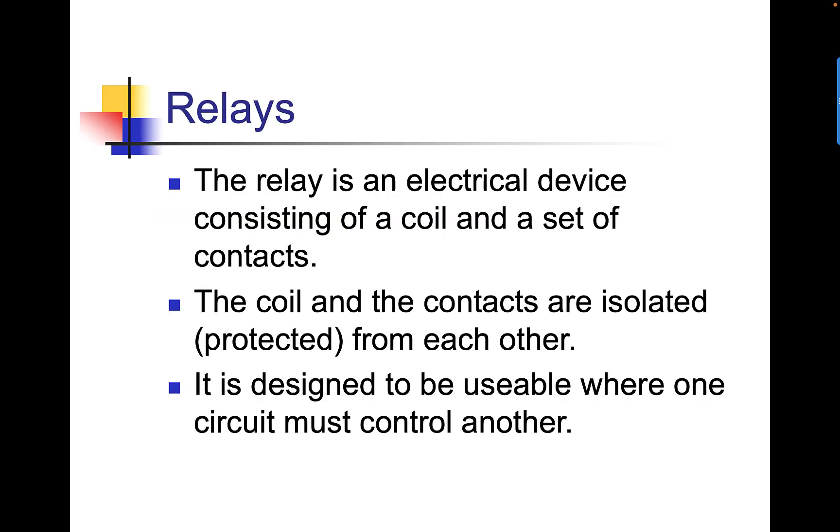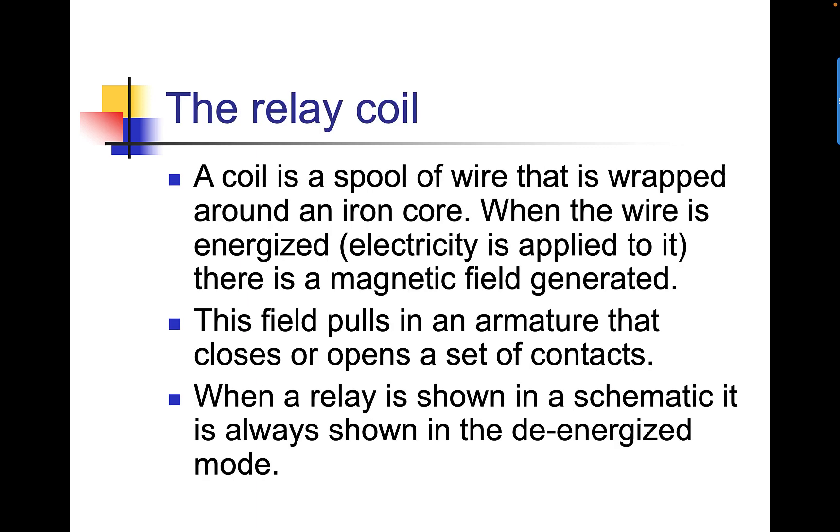A relay is an electrical device consisting of a coil and a set of contacts. The coil and the contacts are isolated or protected from each other. It is designed to be usable where one circuit must control another. The relay coil is a spool of wire wrapped around an iron core. When the wire is energized, meaning electricity or electrical current is applied to it, there's a magnetic field generated.